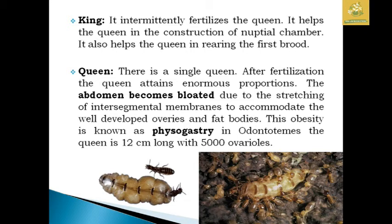Regarding caste classification, the king intermittently fertilizes the queen and helps in the construction of the nuptial chamber. It also helps the queen in rearing the first brood in the colony. There is a single queen in each colony. After fertilization, the queen attains enormous proportions — the abdomen becomes bloated due to stretching of the intersegmental membrane to accommodate well-developed ovaries and fat bodies. This obesity is known as physogastry. The queen can be around 12 cm long and contain around 5,000 ovaries in the abdomen, laying around 5,000 eggs per day.